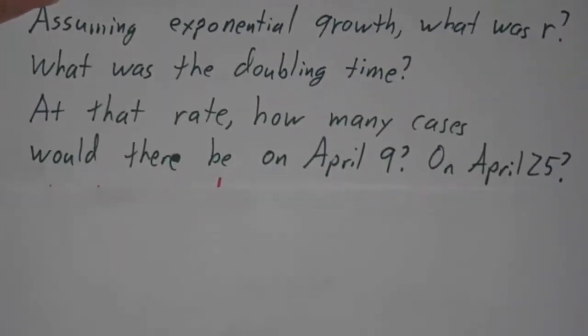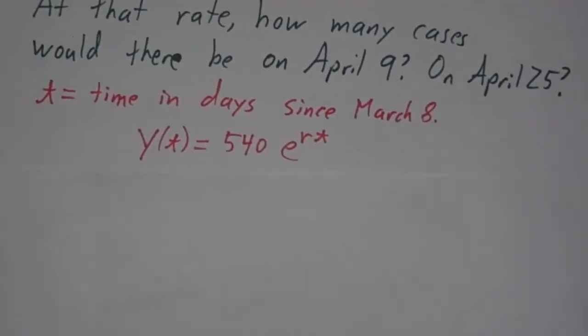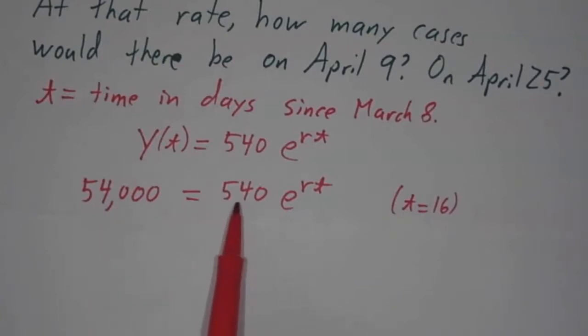And once you know the doubling time, you can ask how many cases would there be 16 days after March 24th and 16 days after April 9th? Okay, so if t is the time in days since March 8th, we have y is a e to the rt, 540 e to the rt. So 54,000 is 540 e to the rt, and t is 16. It's 16 days.